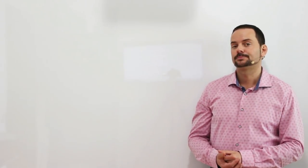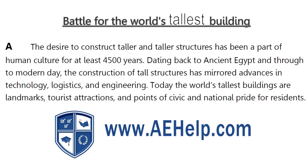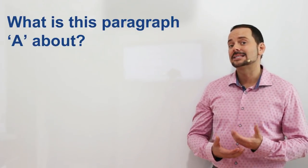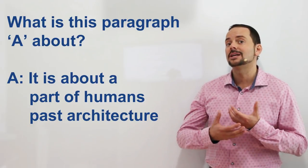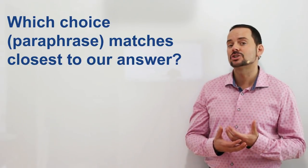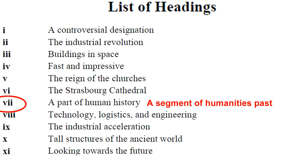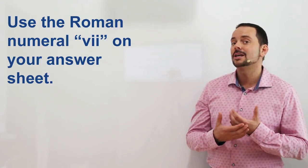Let's read the introduction now. 'Battle for the World's Tallest Building. The desire to construct taller and taller structures has been a part of human culture for at least 4,500 years. Dating back to ancient Egypt and through to modern day, the construction of tall structures has mirrored advances in technology, logistics, and engineering. Today, the world's tallest buildings are landmarks, tourist attractions, and points of civic and national pride for residents.' What is this paragraph about? This paragraph is about the architectural past of human history. Which of our choices matches the closest? It seems to be choice number seven — 'a part of human history.' Make sure to use the Roman numeral in your answer sheet.